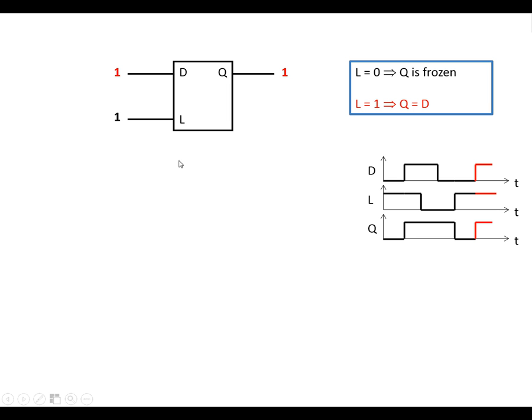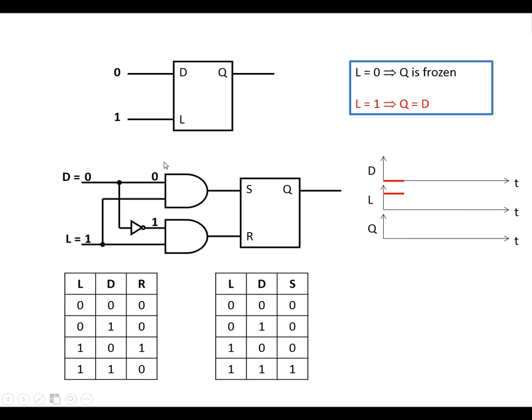So whenever L is low, Q stays in whichever state it was in previously. And whenever L is high, Q is exactly the same as D. We're now going to look at the internal circuitry to show how this can be made — with three logic gates and an active high bistable with set and reset inputs, and Q output.